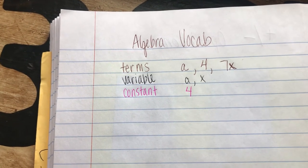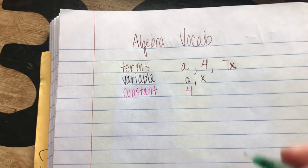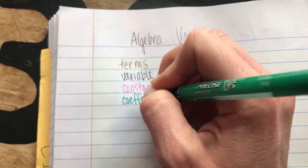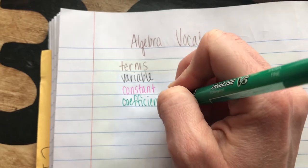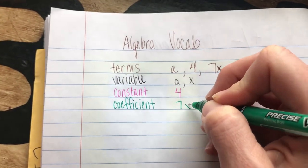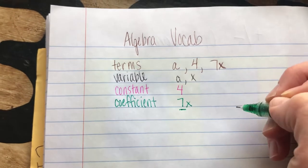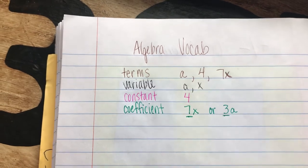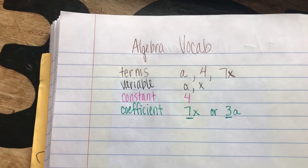Another word you need to know is coefficient. The coefficient is the number that's getting multiplied by the variable. So the 7 in 7x or the 3 in 3a—it's the number before the variable.